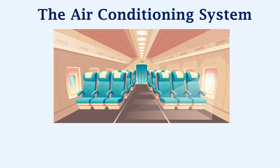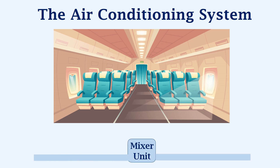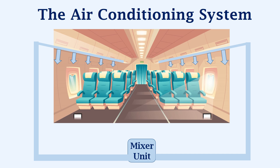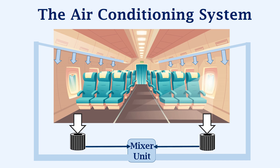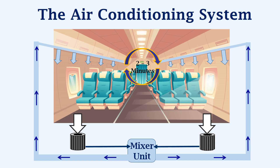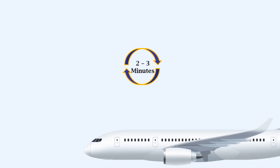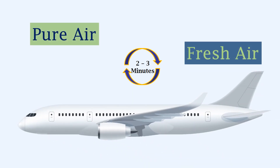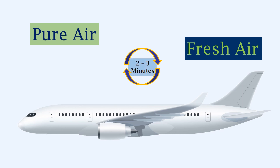To get a better understanding of the air distribution and purification process, let's take a different look inside the cabin. The cold air from the mixer unit is distributed via vents, as shown here. The impure air is taken through vents in the cabin floor, and this impure air gets purified as it passes through the HEPA filter. From the HEPA filter, the pure air is sent to the mixer unit, which mixes it with fresh air, and this mixed air is sent back to the aircraft. This continuous process ensures that the air inside the aircraft gets renewed every two to three minutes, thus ensuring that the air inside the aircraft is safe.